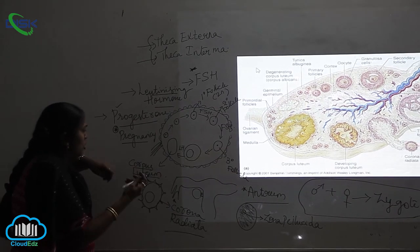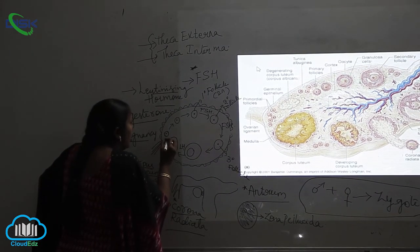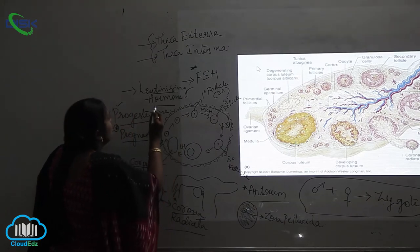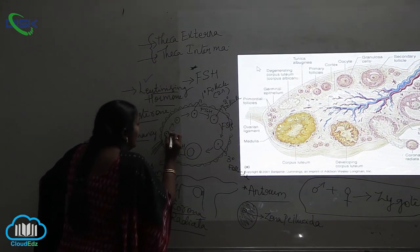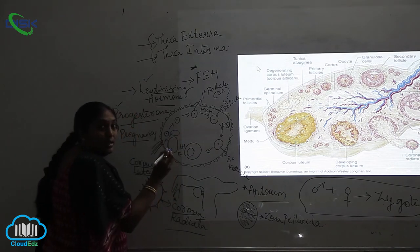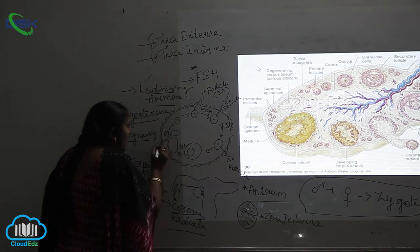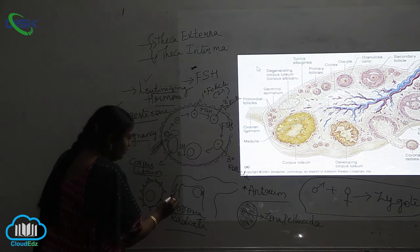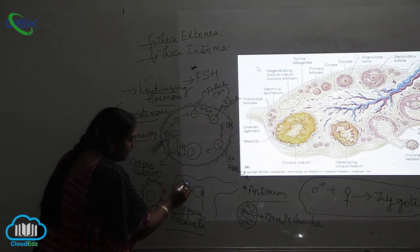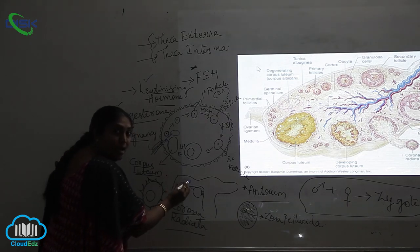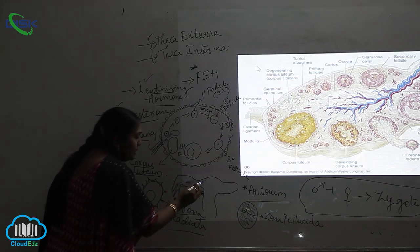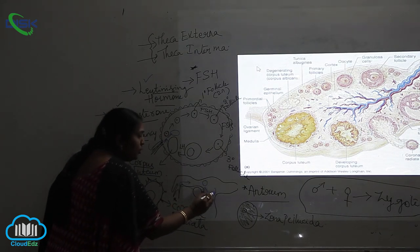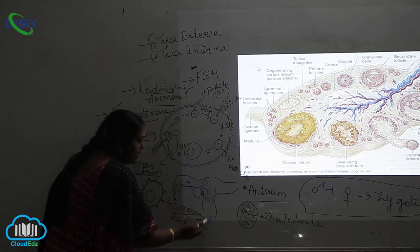If fertilization does not occur, then in the presence of luteinizing hormone the egg is released and travels through the fallopian tubule. Since fertilization does not occur, through the endometrium of the uterus, uterine bleeding will occur.